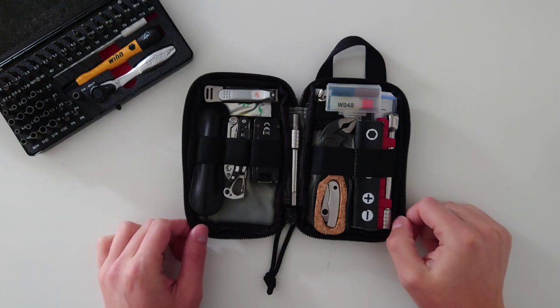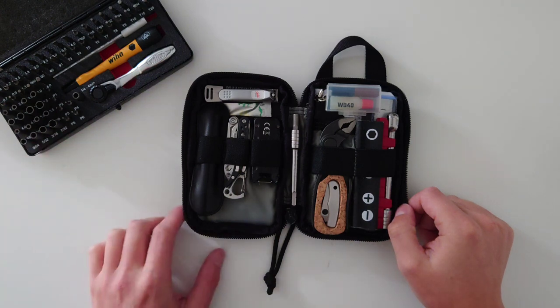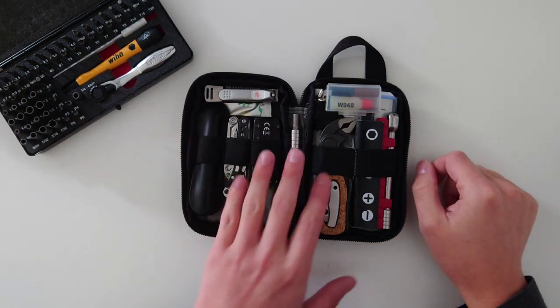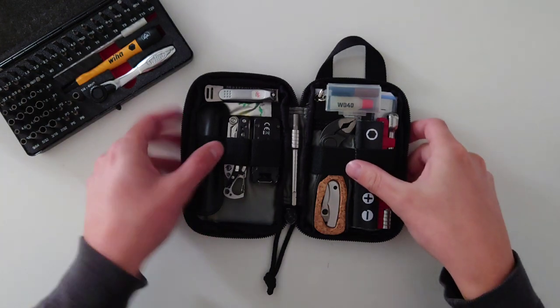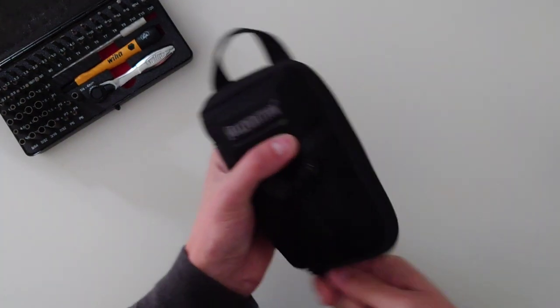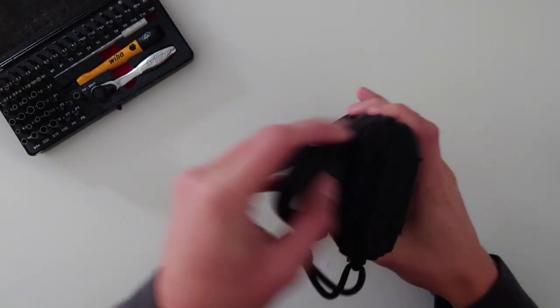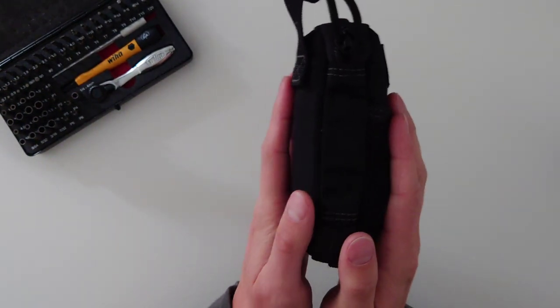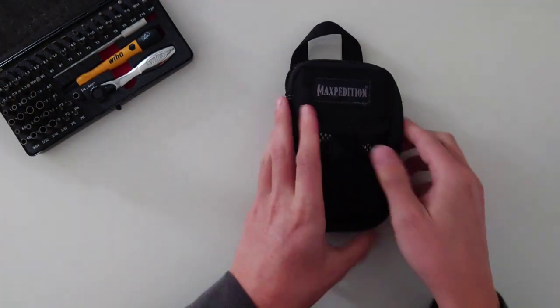I've had my Maxpedition Micro Pocket Organiser for about two years now, and I've been slowly building up a selection of tools in there. I'm going to go from left to right and show you everything I've got in the kit. It goes quite deep inside, so it's quite a lot thicker than the suggested two inches that it's supposed to be. But as you'll see in a second, it has a hell of a lot of kit in it.